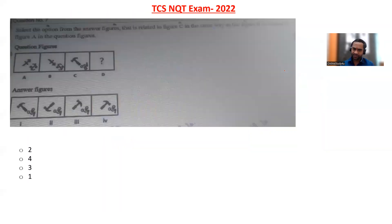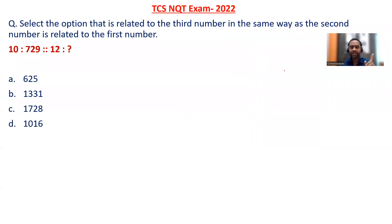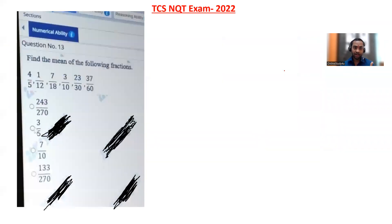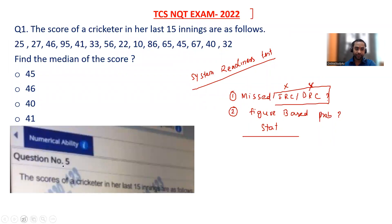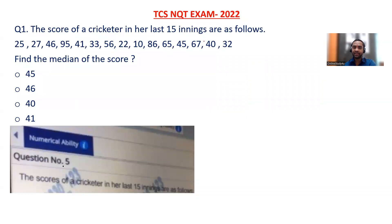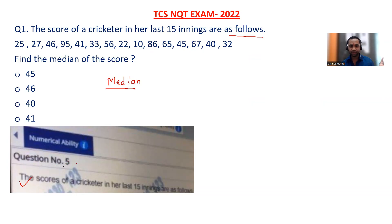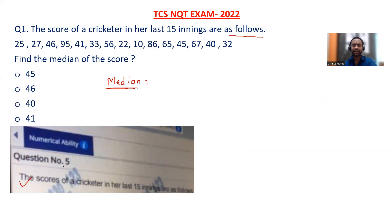Now, for numerical ability, understand that the level will be better — it will be good. The score of a cricketer in her last 15 innings is as follows. Find the median of the scores. These are actual questions asked in the TCS examination — not simply written down, but genuinely asked in the TCS exam.